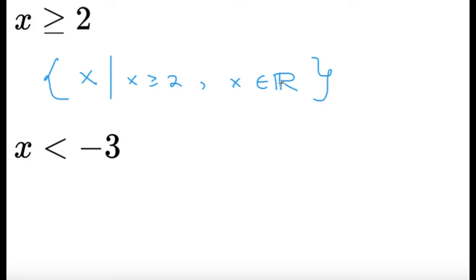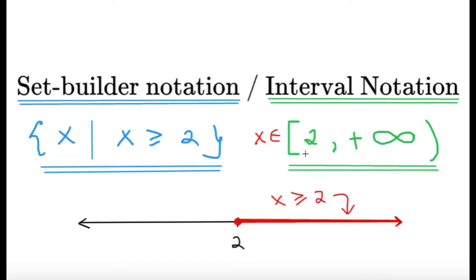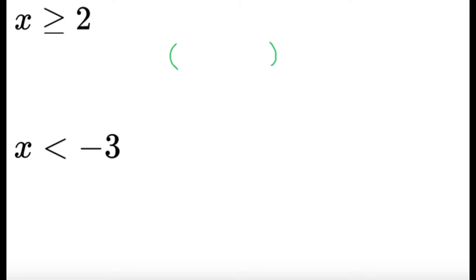The other standard method is interval notation. There are two main things to know: the use of parentheses and the use of brackets. They don't have to be paired the same way — the left side might be a bracket while the right is a parenthesis, or both sides could match. Parentheses indicate that the endpoint is not included.